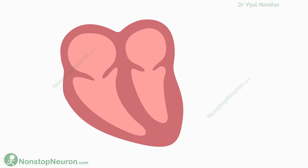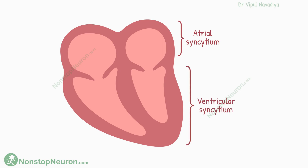There are actually two syncytia in the heart. One is the atrial syncytium, which makes the wall of the atria, and the other is the ventricular syncytium, which makes the wall of the ventricles. They are separated by fibrous tissue called the atrioventricular ring. Impulses cannot cross this fibrous tissue, so normally the atrial and ventricular impulses do not mix up, allowing independent contraction of atrial and ventricular muscles.